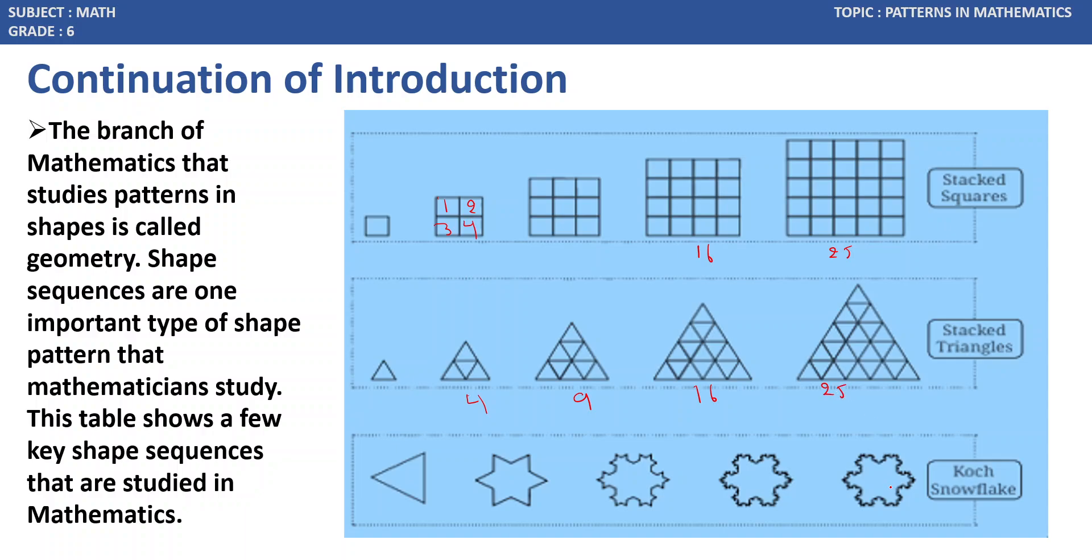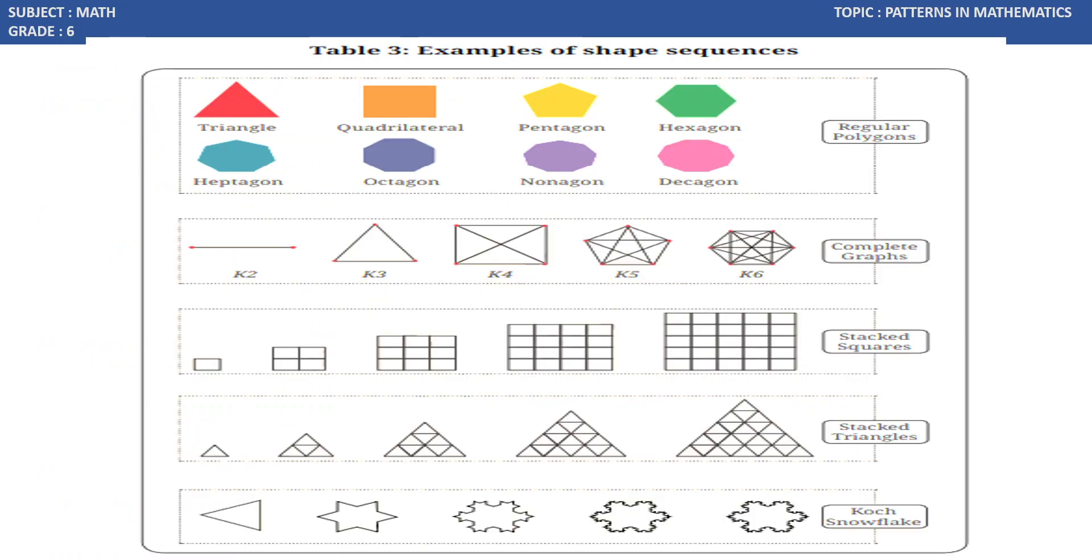And the next one is a Koch snowflake. See, this is table 3 which we need to keep it in mind for solving this exercise problems. The first one is regular polygons. Regular polygons involves triangles, quadrilaterals, pentagon, hexagon, heptagon, octagon, nonagon, decagon.